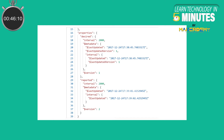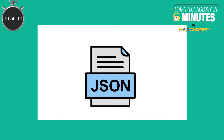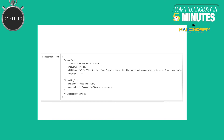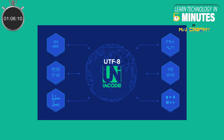Device Twins in Azure IoT are JSON documents that store device state information, including configuration, metadata, and conditions. JSON is an open standard file format that contains human readable text and stores values in attribute value pairs and array forms. In the device twin JSON document, all keys are UTF-8 encoded.